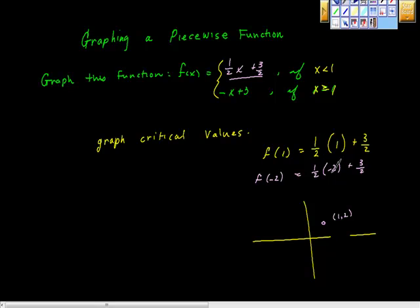What's one half times negative two? It's negative one. And what's negative one plus three halves? One half. So we get f of negative two equals one half. So we get negative two, one half. And all I'm going to do is connect these dots. So that's the left side.